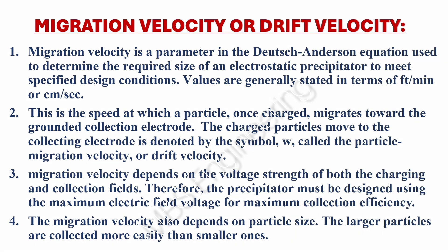We are going to understand what the migration velocity or drift velocity is and how it is useful in the electrostatic precipitator system. Migration velocity is a parameter in the Deutsch-Andersen equation used to determine the required size of an electrostatic precipitator to meet specified design conditions.